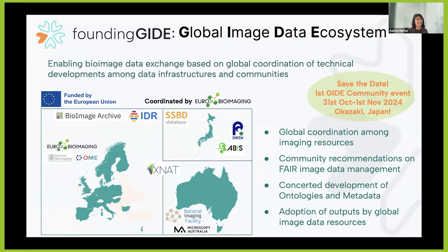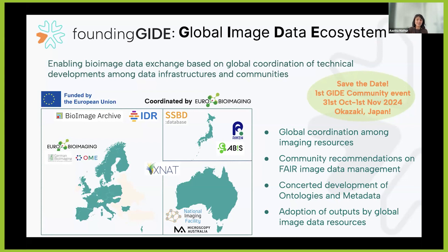A new project that has started from EuroBioImaging is called GUIDE — Founding a Global Image Data Ecosystem. We are working with global partners behind running data repositories like BioImage Archive and IDR in Europe, partners from Japan who run the SSBD database, and data management systems like XNAT. We are developing community guidelines that are easy for users to adopt and reaching a global understanding on suggested ontologies, so that data can be easily made openly available through these repositories. Partners include EuroBioImaging, German BioImaging, the OME team, APIS from Japan, and NIF and Microscopy Australia.